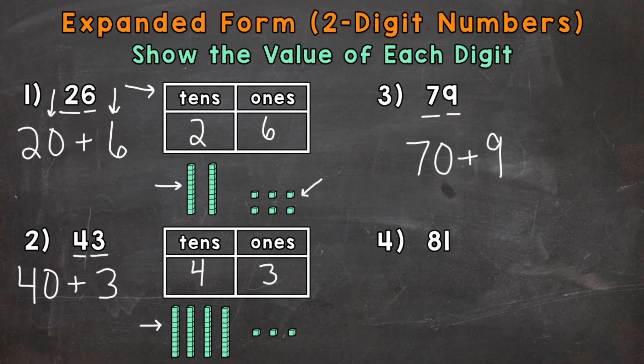And lastly, number 4, we have 81. So we'll start with the 8, which is in the tens place. So it has a value of 80. Plus a 1 in the ones place. And that 1 has a value of 1, because it's in the ones place. So 80 plus 1.